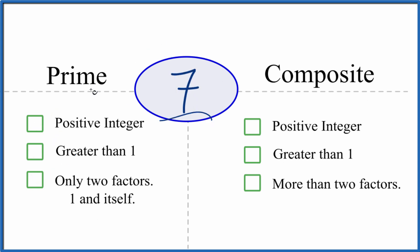Is 7 a prime or a composite number? It's a positive integer greater than 1, and the only factors that divide into 7 are 1 and 7. So 7 is a prime number.